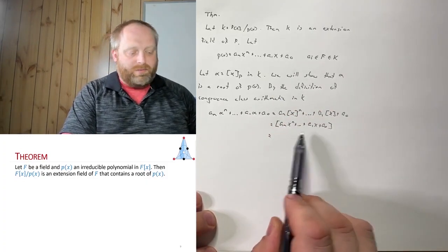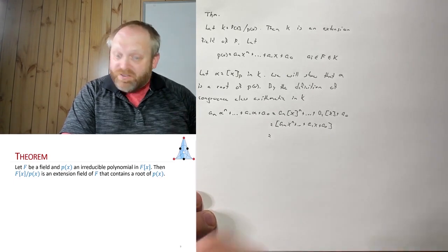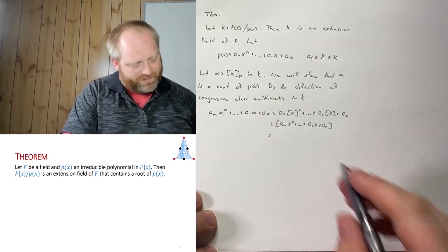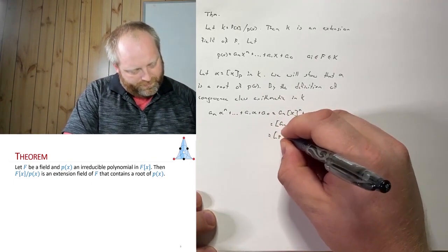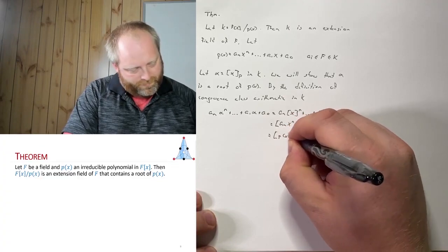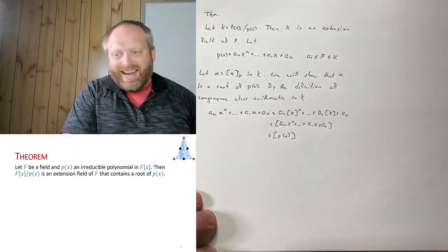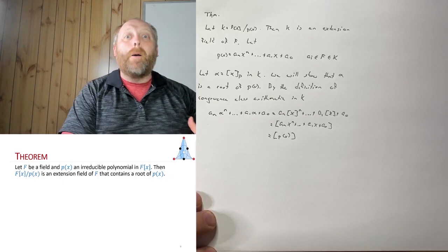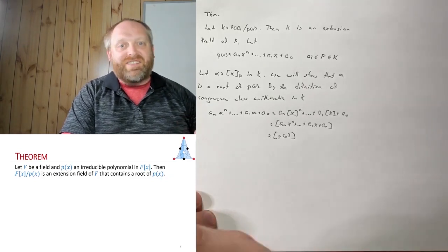Now this, well, this is just by our definition, this is just p(x). And this is mod p, so mod itself, which is just going to give us zero.